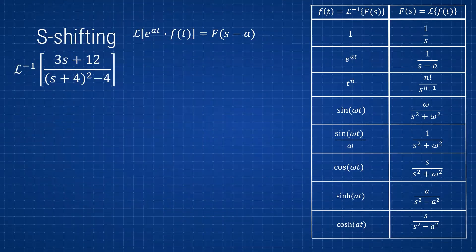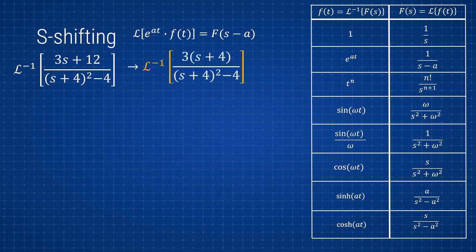Now let's look at an example going from the s-domain to the t-domain — taking the inverse Laplace. This is basically the same process. They're asking us to find the inverse Laplace of (3s+12) / ((s+4)²−4). We can notice we have (s+4) in parentheses, all squared — that should immediately catch your attention that something might be shifted here, since there aren't really any other forms like this in standard tables.